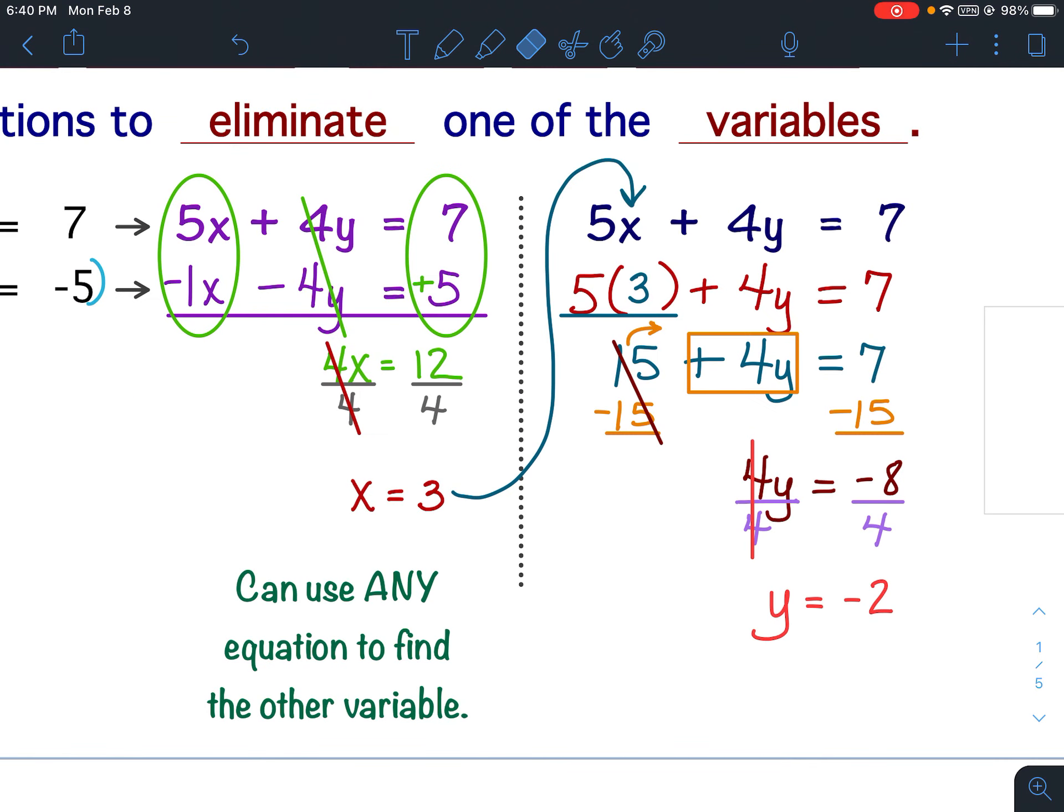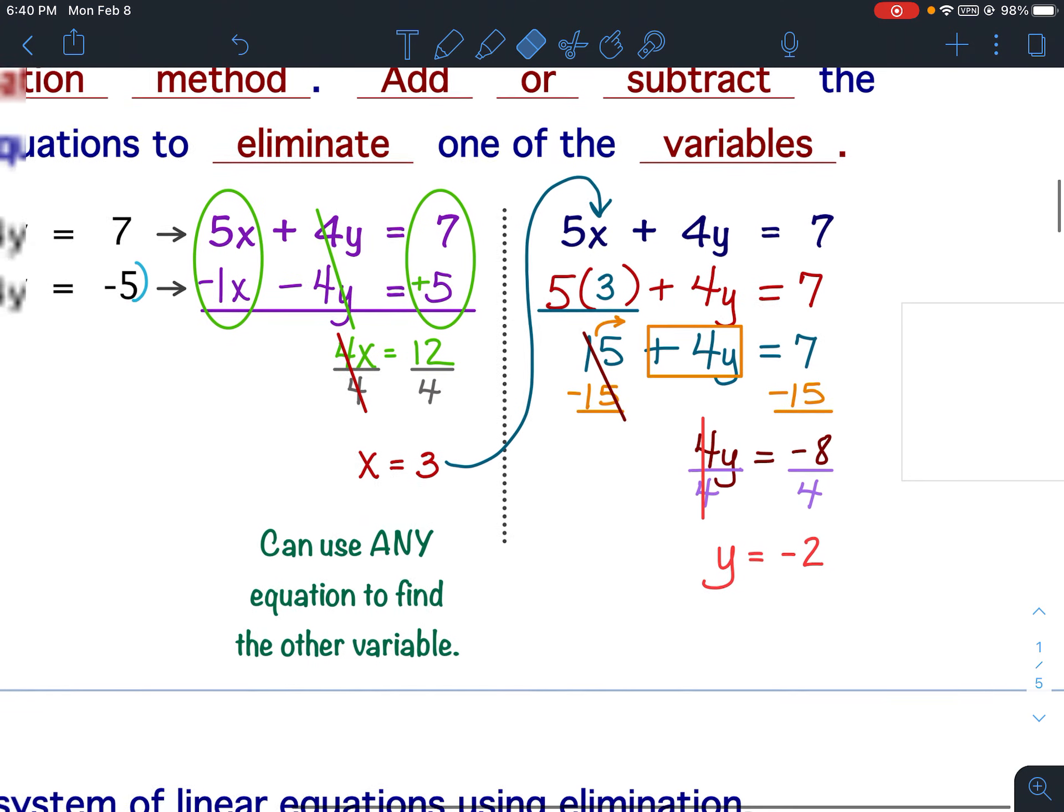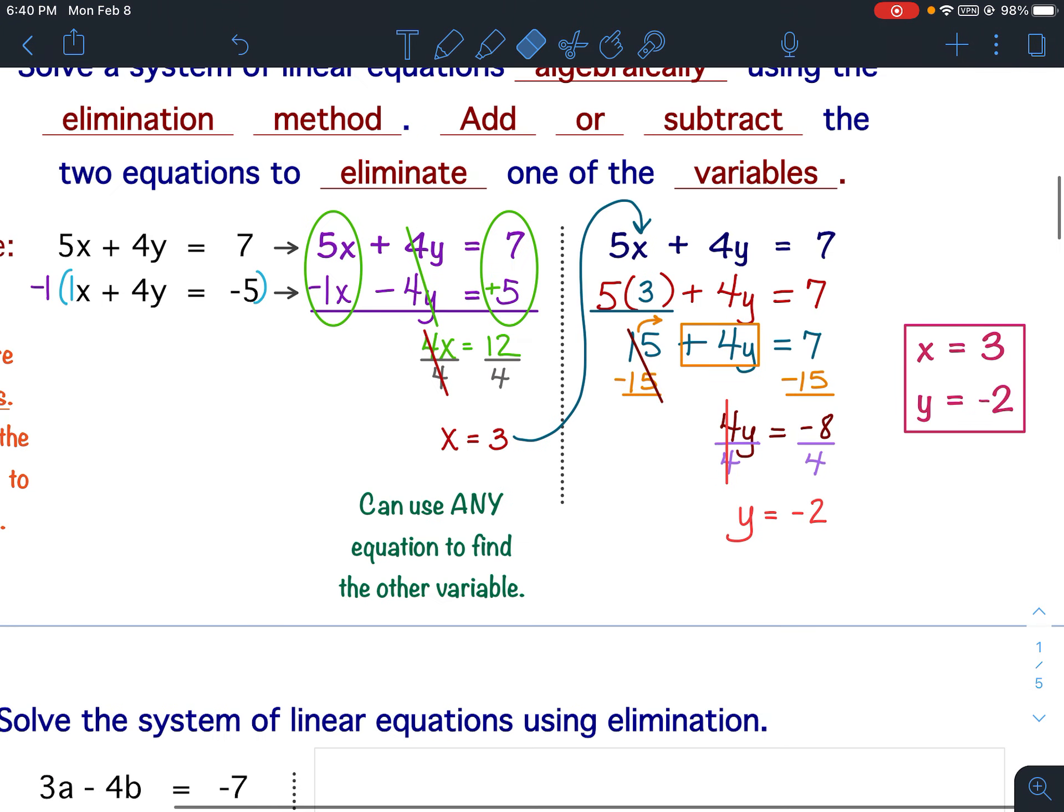So we have x equals 3 and y equals negative 2. In alphabetical order, we would write our final answer. x equals 3, y equals negative 2.